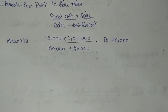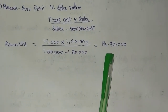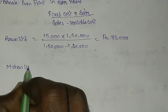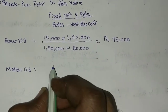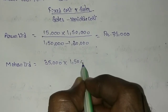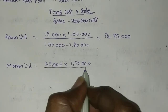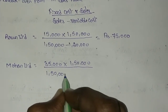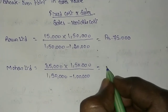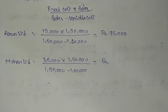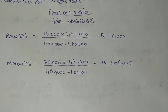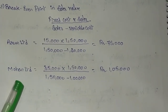So the breakeven point in terms of sales value for Arun Limited is 75,000. For Mohan Limited: fixed cost 35,000 into sales 1,50,000, divided by (1,50,000 minus variable cost 1,00,000). The breakeven point for Mohan Limited comes to Rs. 1,05,000.